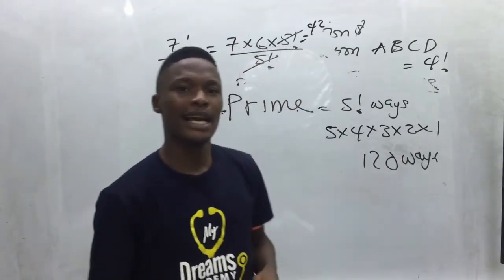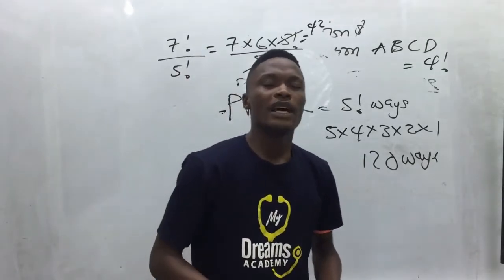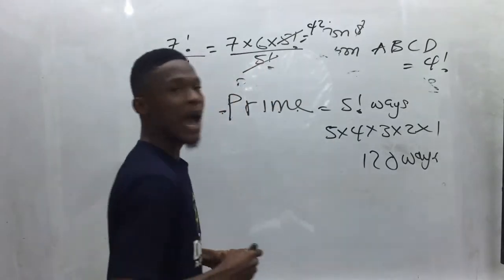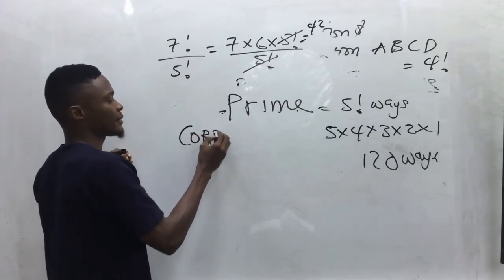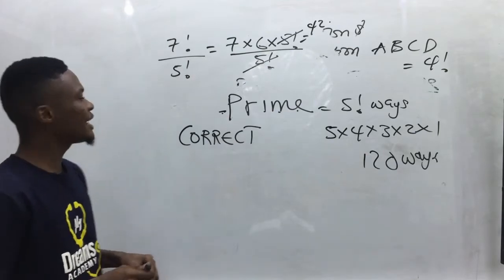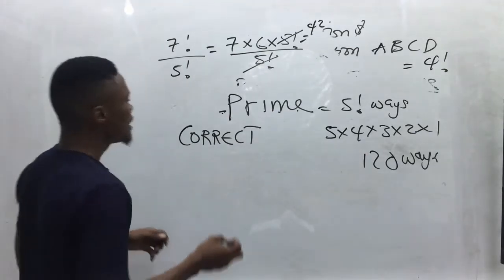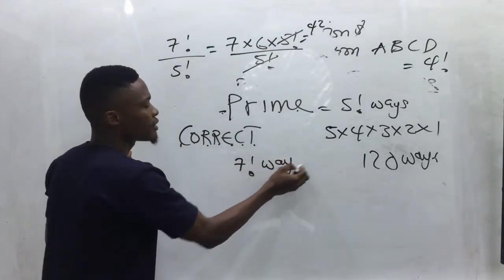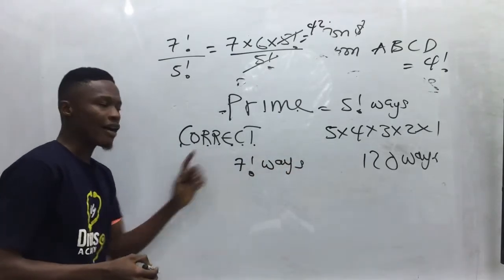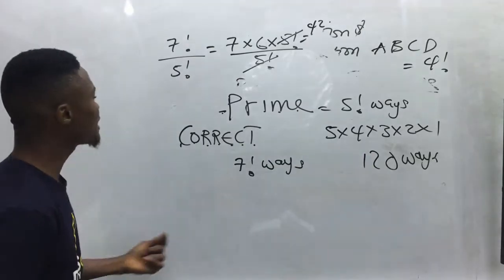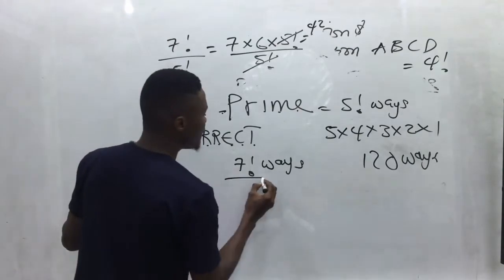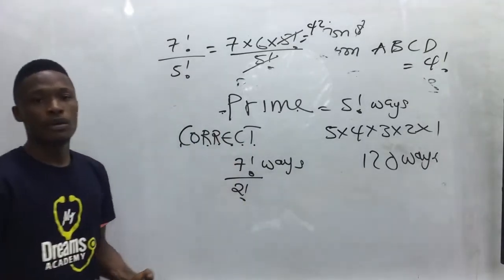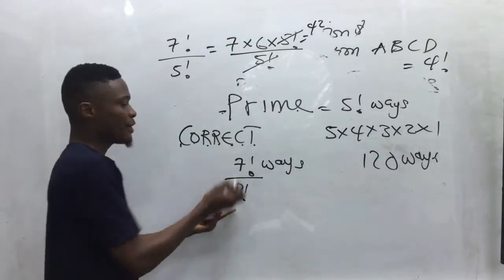In some cases, letters repeat. Whenever letters repeat, divide by the number of repetitions. For example, the word CORRECT has seven letters, giving seven factorial, but R appears twice, so divide by two factorial. The answer becomes seven factorial over two factorial.